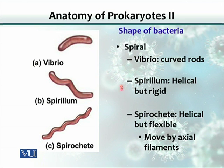All of these spiral bacteria — vibrio, spirillum, and spirochete — they move by axial filaments, beating that structure for locomotion.